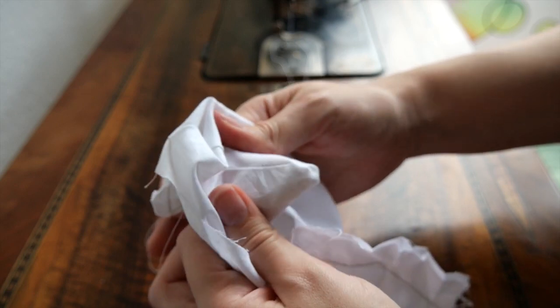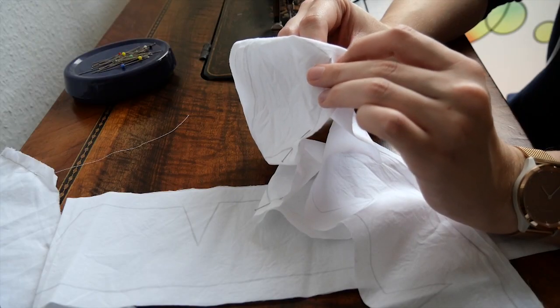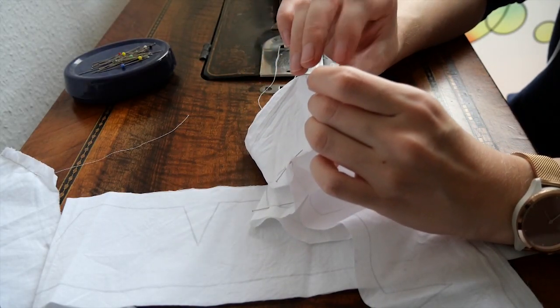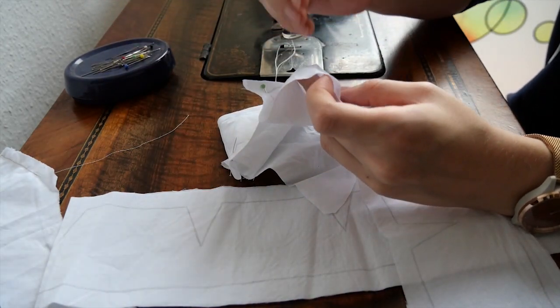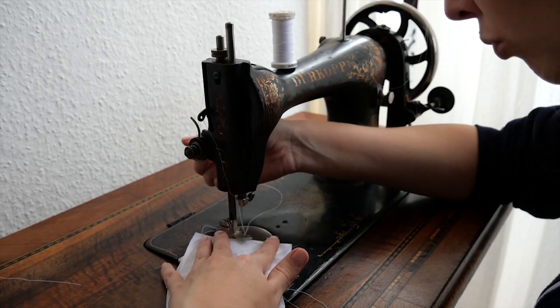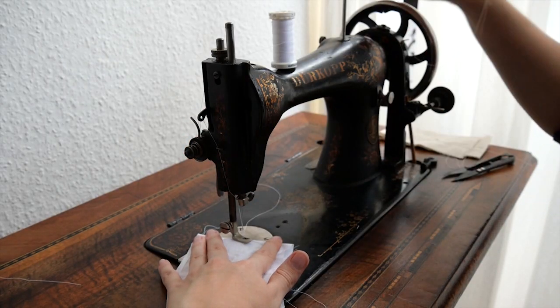This time the seam was much better, so I decided to go on sewing it on the machine. Here I'm pinning together the darts of the round shape of the pattern and sewed them with the machine too.